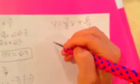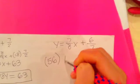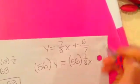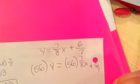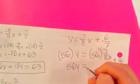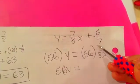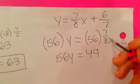So what you're going to want to do is write down 56 in parentheses so you don't get confused. Then you write equals 56 times (7/8)x plus (6/7). So 56 times y is 56y. Equals 56 times 7 — let me get my calculator out. 56 times 7 is 392. But we don't write that down — we divide by 8. So 392 divided by 8 is 49. So the answer is 49x — can't forget the x.